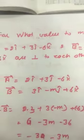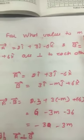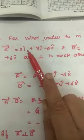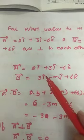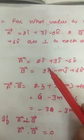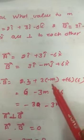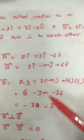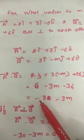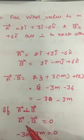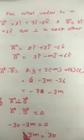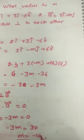Now the next numerical: we have to find the value of m such that vector a equals 2i cap plus 3j cap minus 6k cap and vector b equals 3i cap minus mj cap plus 6k cap are perpendicular to each other. Since perpendicular vectors have dot product 0, we compute: 3×2 minus 3m minus 36, which gives minus 30 minus 3m. Setting this equal to 0, we get m equals minus 10.